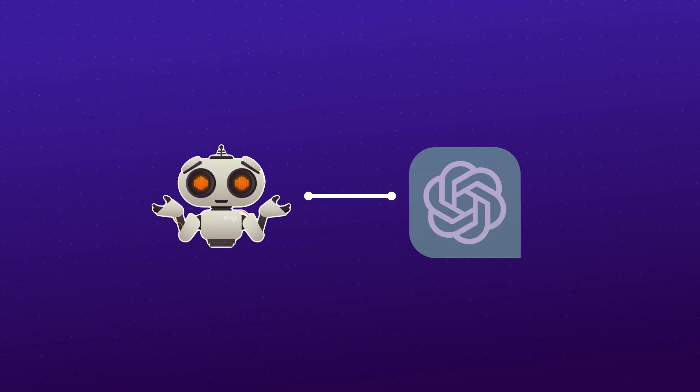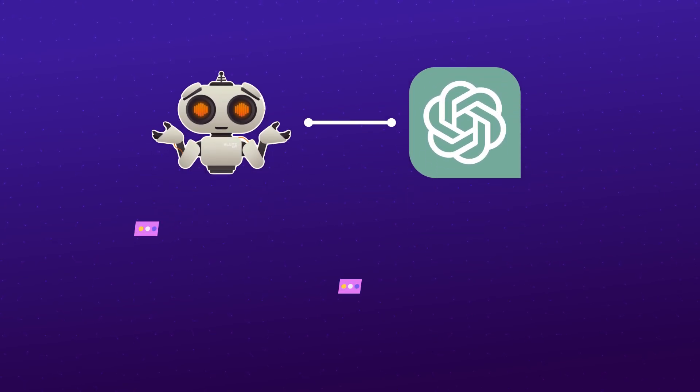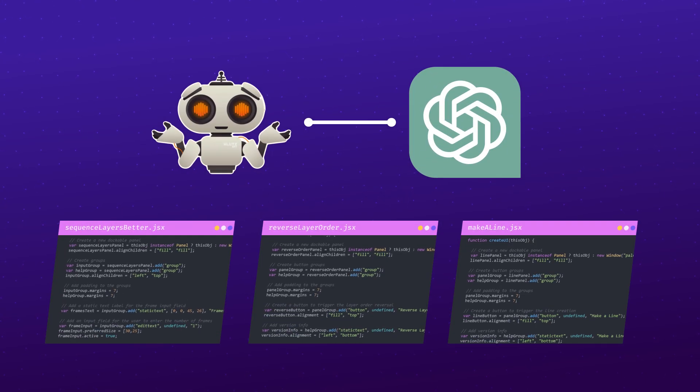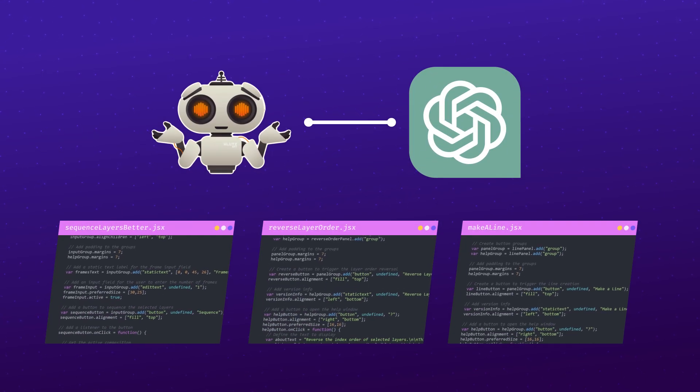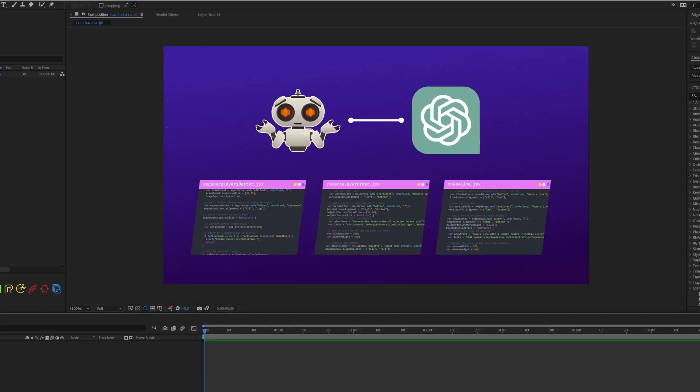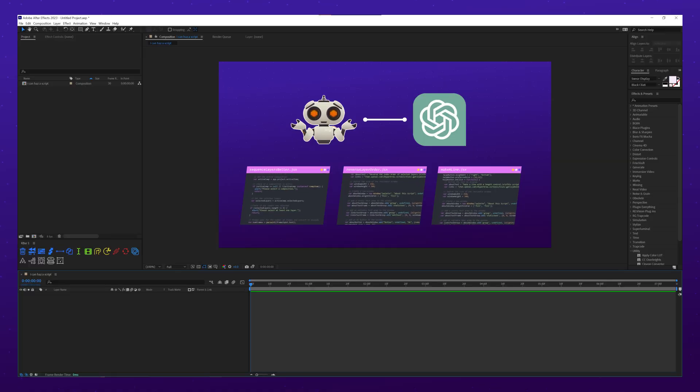I just used a brand new tool to get ChatGPT to write me three actually useful After Effects scripts, and I didn't even have to leave After Effects to do it. Prior to this video, I had absolutely zero experience with scripting in After Effects, so this is absolutely something that you can do even if you've never touched scripting yourself.